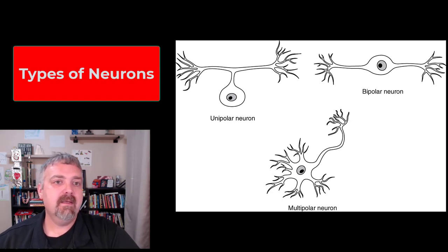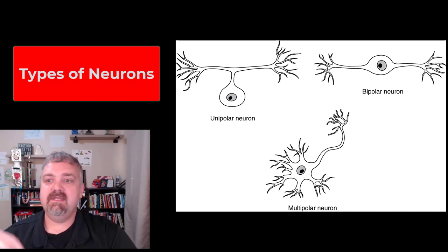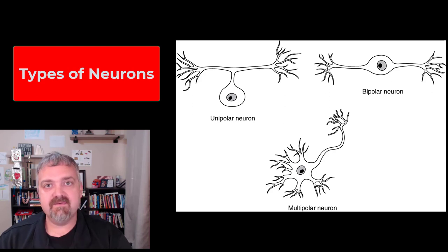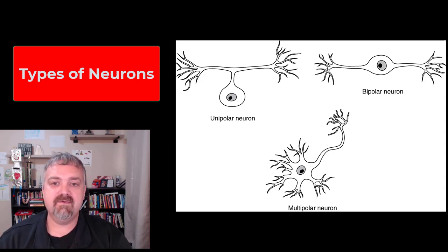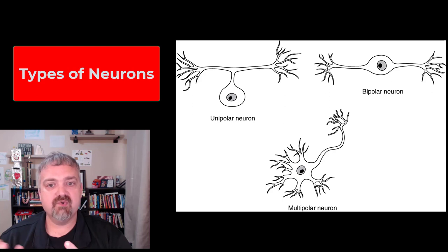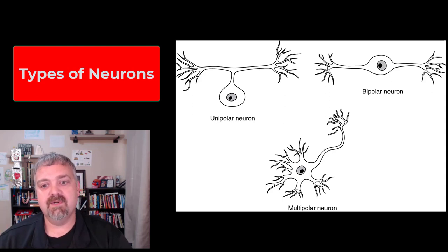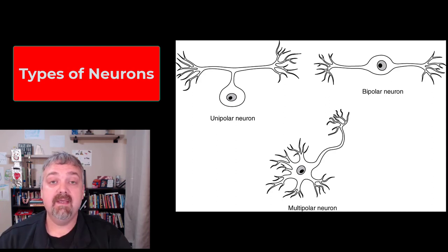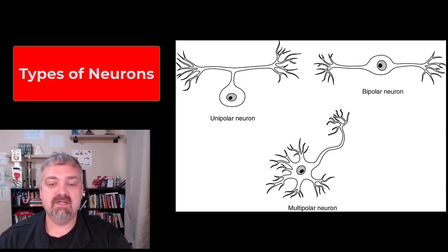Hey everybody, Dr. Rowe here. In the last video, we talked about the structure of a typical neuron. Now we're going to look at the different types of neurons we're going to see in this class. You can see here on the screen we have three types structurally: unipolar neurons, bipolar neurons, and multipolar neurons. We'll talk about these, but then I'm going to add another classification in as well.